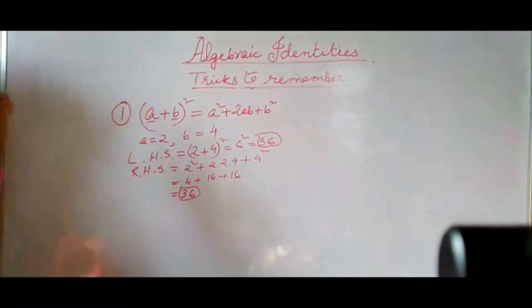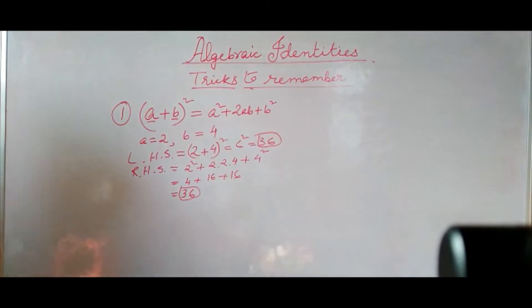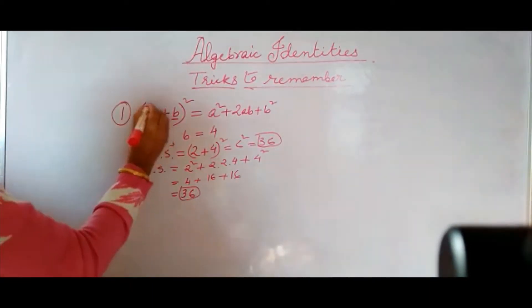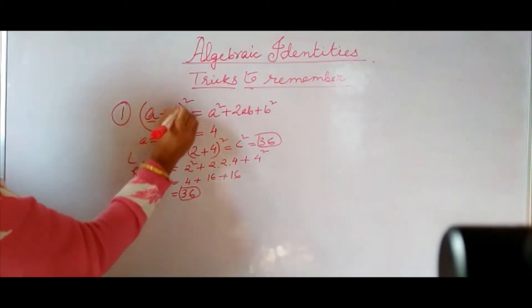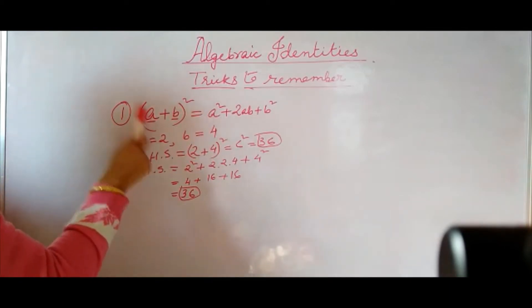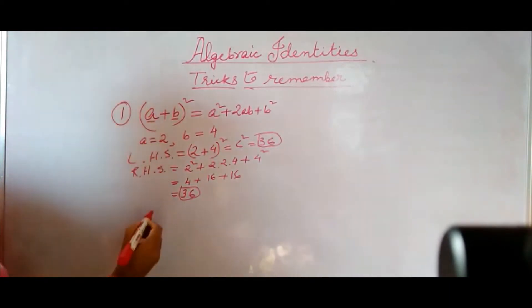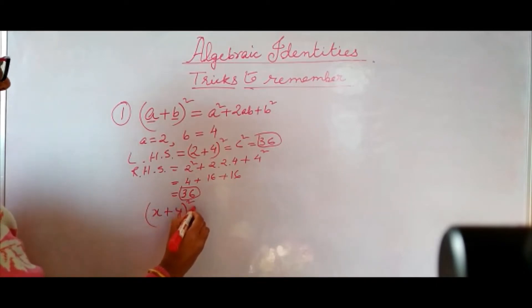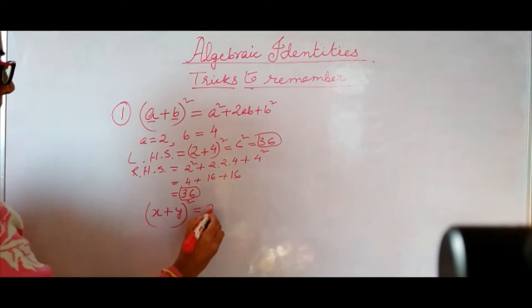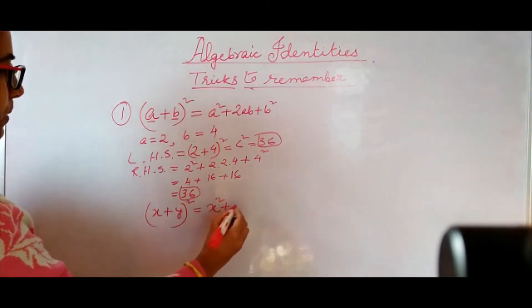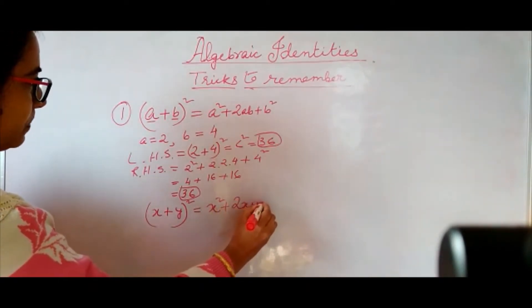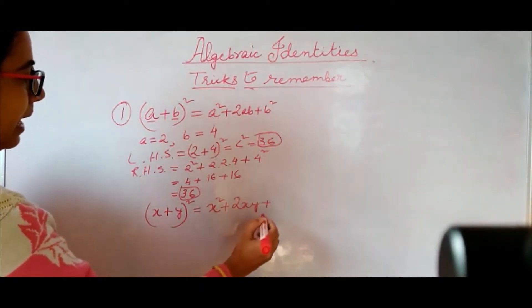That is why algebraic identity is an equality which is true for any value of its variable. So in place of A there may be X plus Y — then whatever values of X and Y you consider, this is always true. That is why this is said to be an identity.